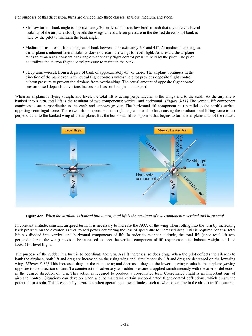It is the horizontal lift component that begins to turn the airplane and not the rudder. In constant altitude, constant airspeed turns, it is necessary to increase the angle of attack of the wing when rolling into the turn by increasing back pressure on the elevator, as well as to add power countering the loss of speed due to increased drag. This is required because total lift has divided into vertical and horizontal components. In order to maintain altitude, the total lift needs to be increased to meet the vertical component of lift requirements to balance weight and load factor for level flight.